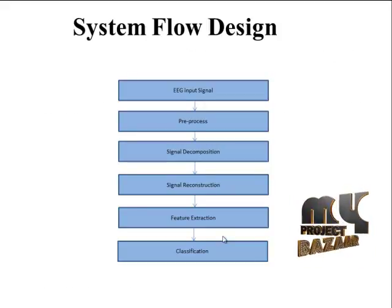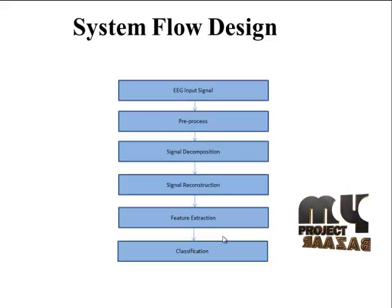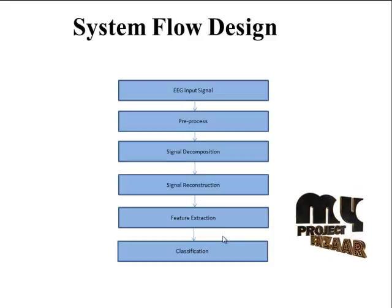This is the flow design of our proposed enhancement system. Initially the EEG dataset is taken as input and undergoes pre-processing, where noise is removed and signal decomposition is performed. The signal is split into five subbands — delta, theta, alpha, beta, and gamma — which are then reconstructed to obtain accurate values for classification.